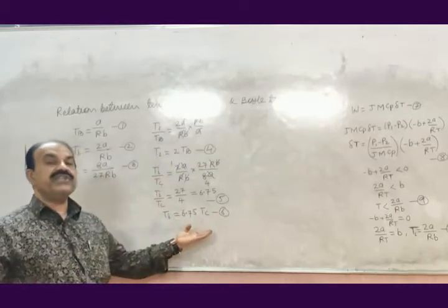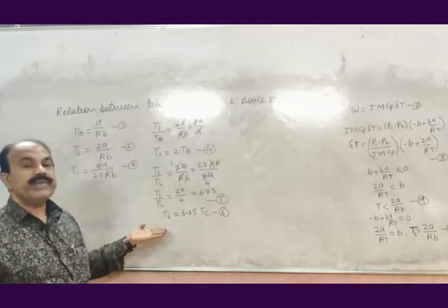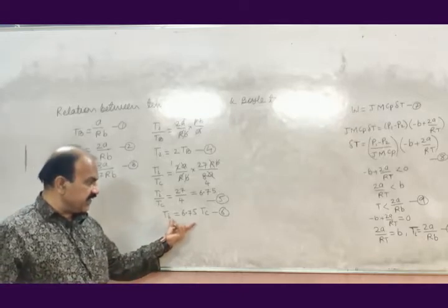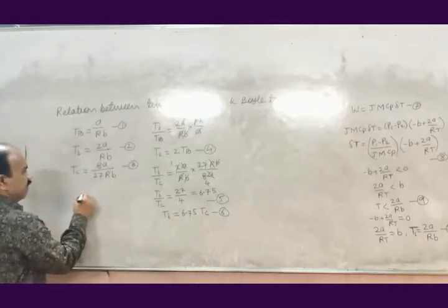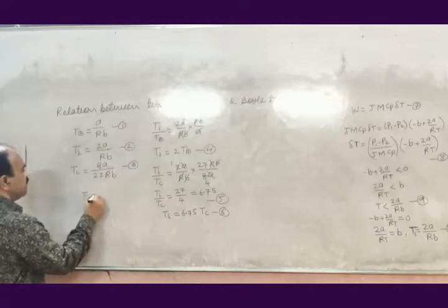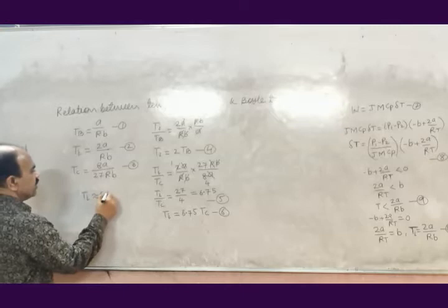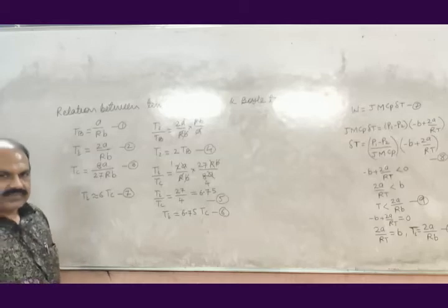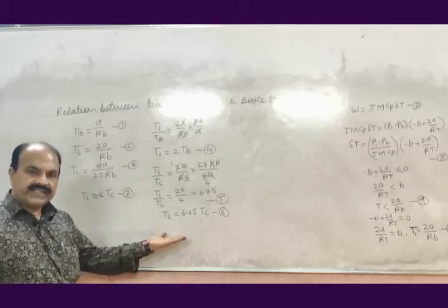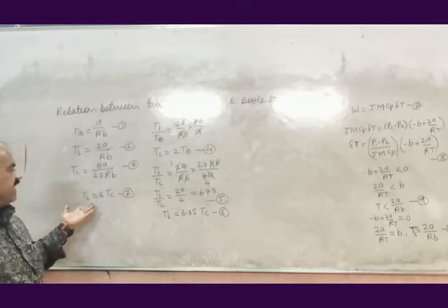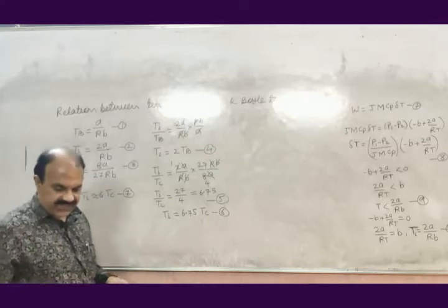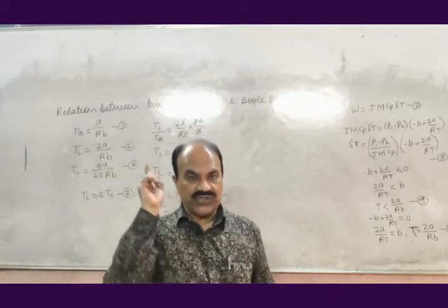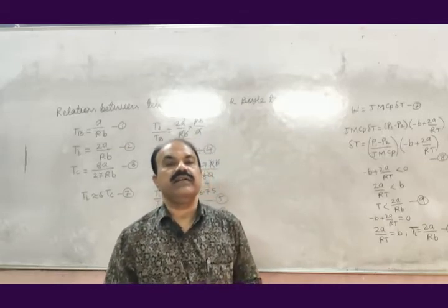That means critical temperature is much lower compared to the temperature of inversion. Practically, equation 6 is corrected because the practical result is Ti ≈ 6 times Tc, equation number 7. If we find this practically, we will get Ti approximately equal to 6 times Tc, meaning the temperature of inversion is about 6 times more than the critical temperature.